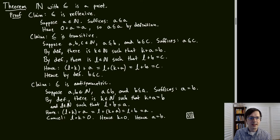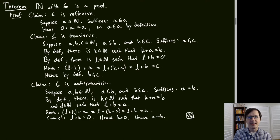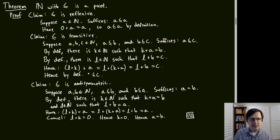For transitivity: given A ≤ B and B ≤ C, we need A ≤ C. Let K and L be natural numbers such that K + A = B and L + B = C. Then (L + K) + A = L + (K + A) = L + B = C. By definition of ≤, A ≤ C.